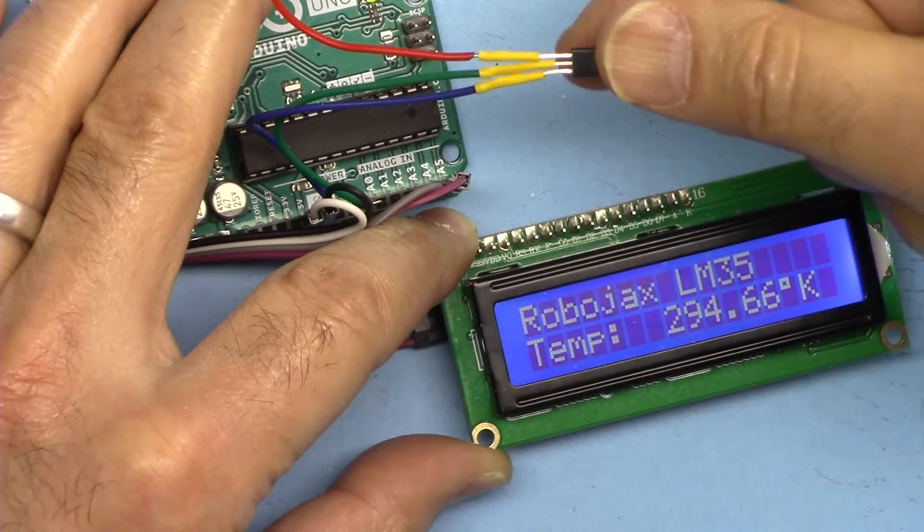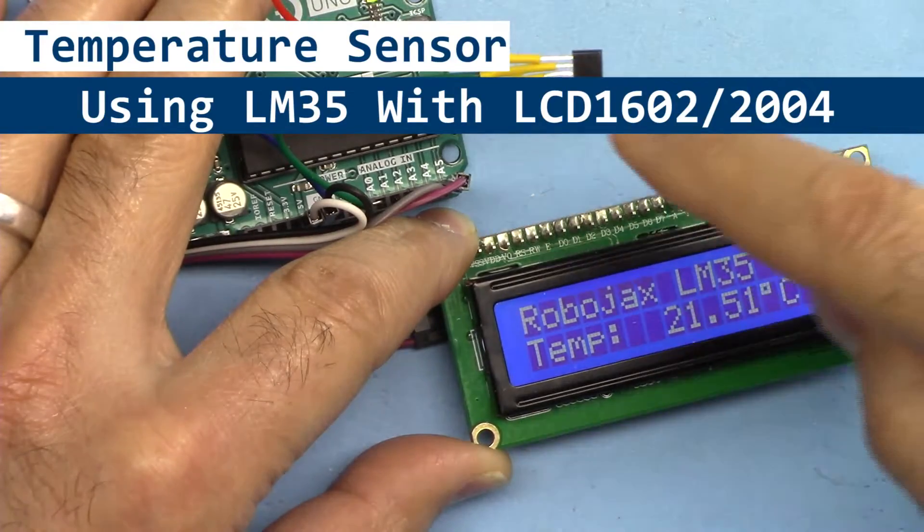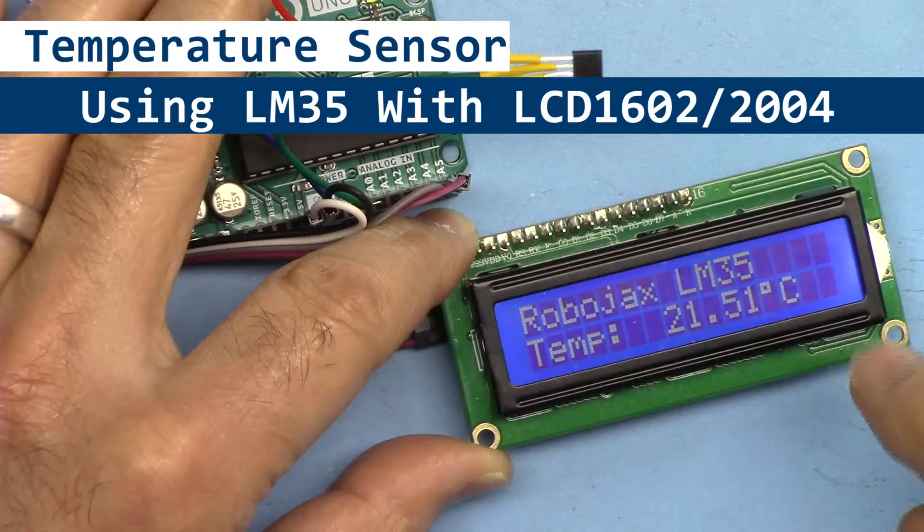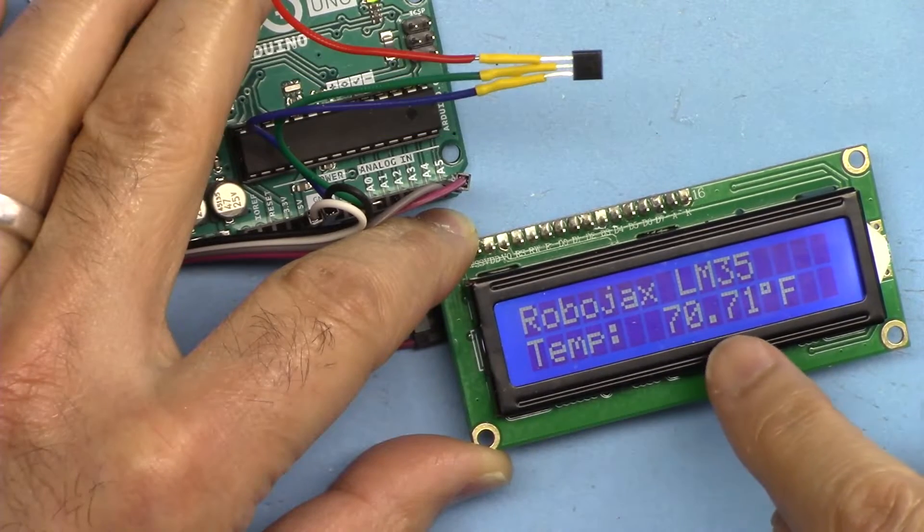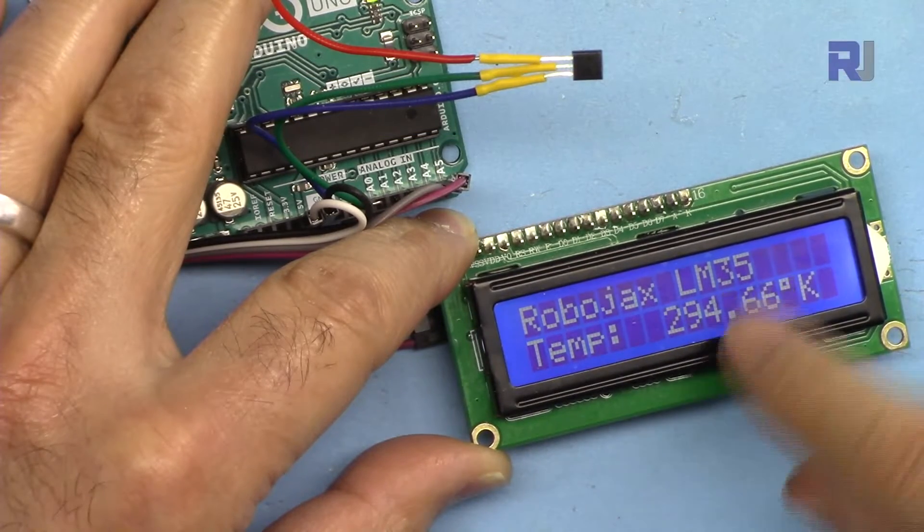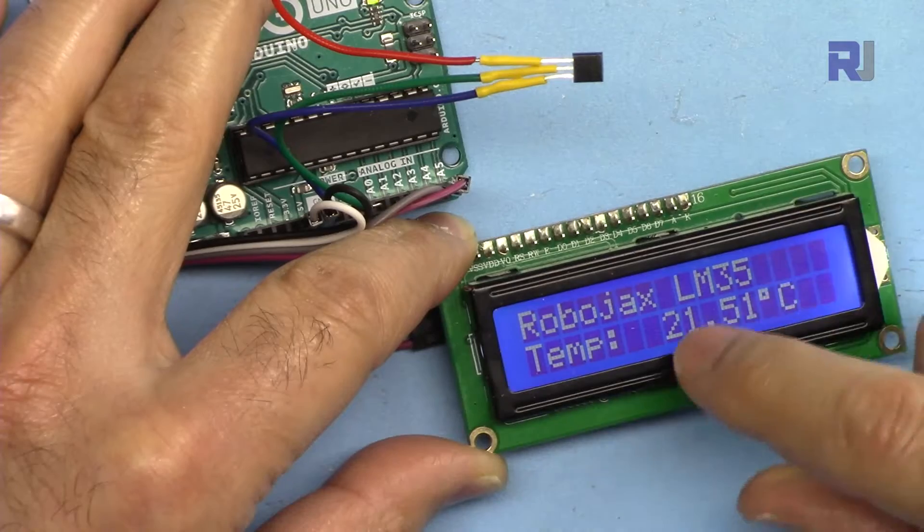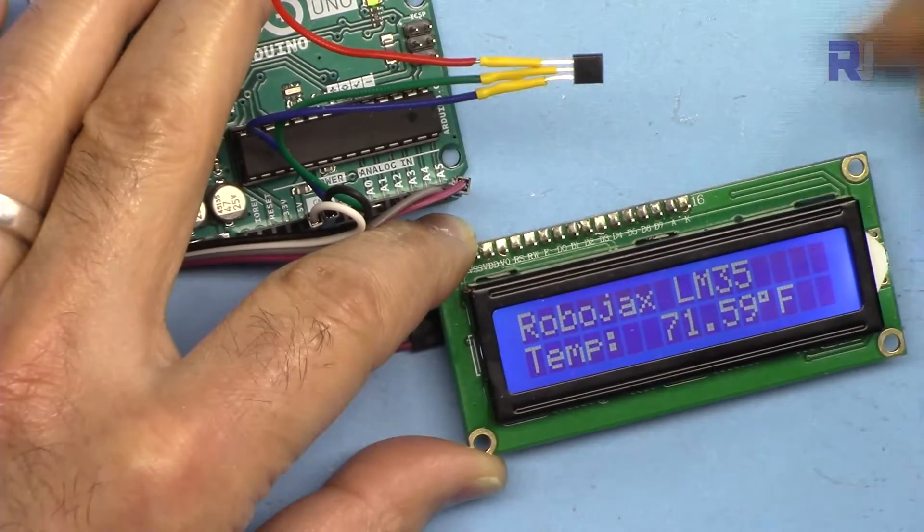In this tutorial we are going to learn how we can use this LM35 3-pin temperature sensor and display the temperature as Celsius, Fahrenheit, and Kelvin on the LCD 1602 using Arduino.